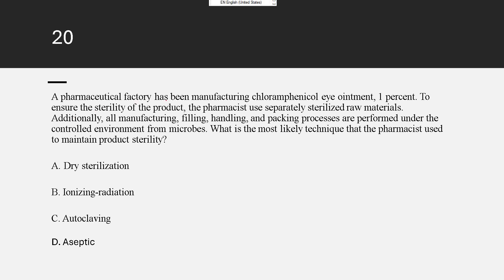A pharmaceutical factory has been manufacturing chloramphenicol ointment 1%. To ensure the sterility of the product, the pharmacy uses separately sterilized raw materials. Additionally, all manufacturing, filling, handling, and packing processes are performed under a controlled environment free from microbes.